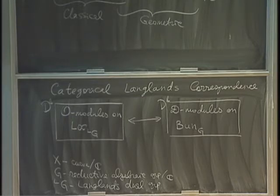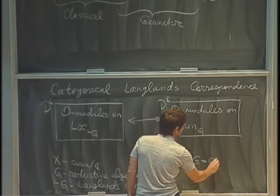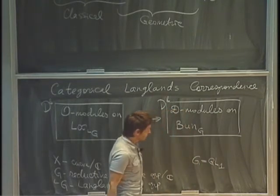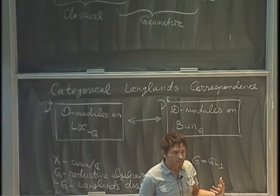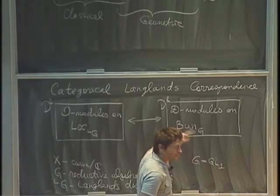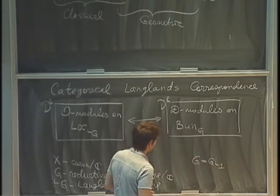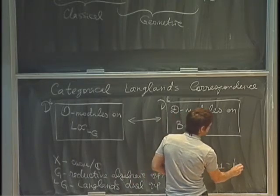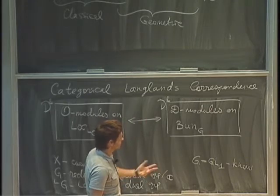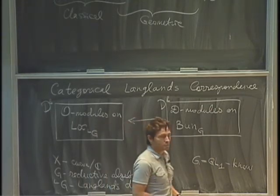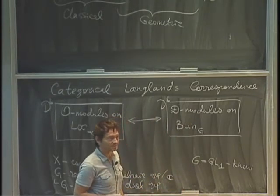I mentioned last time that in the abelian case, when G is GL1 or the multiplicative group, this is actually a theorem — a version of the Fourier-Mukai transform, studied in particular by Laumon, Jarré-Laumon, and Mirkovic-Vilonen. For general G, it is a conjecture due to Arinkin and Gaitsgory. Hopefully soon it will be proved in some cases — maybe already proved. We'll hear more from Arinkin tomorrow.